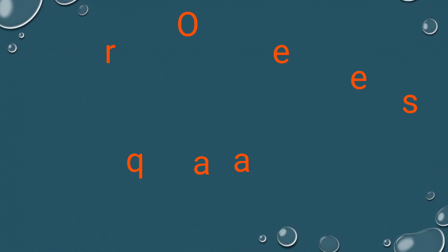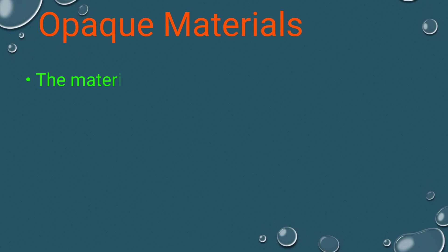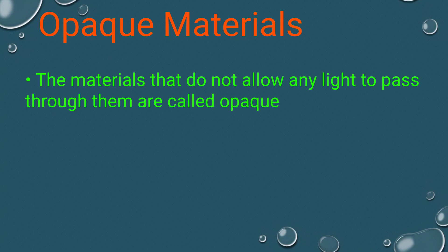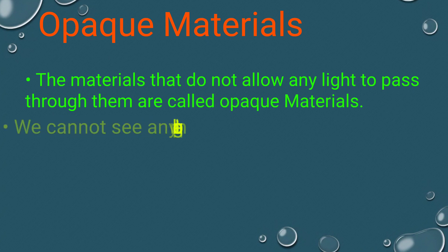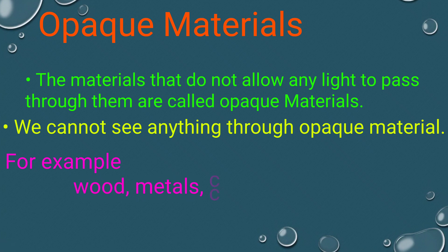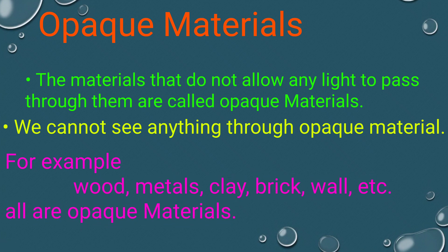Opaque materials are materials that do not allow any light to pass through them. We cannot see anything through opaque materials. For example, wood, metals, clay, bricks, and ball are all opaque materials.